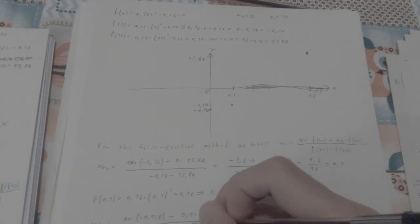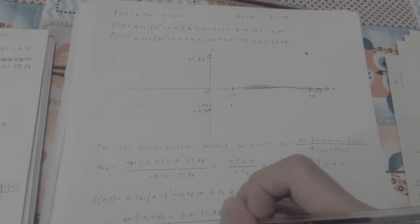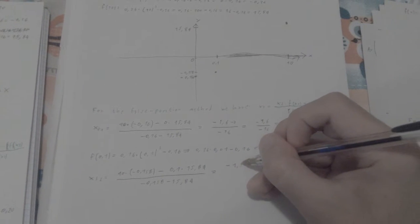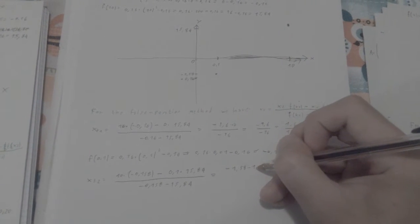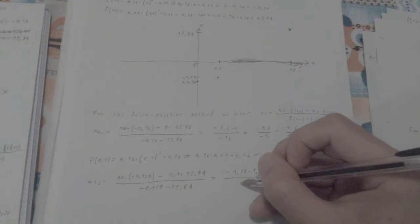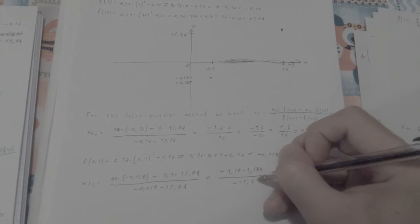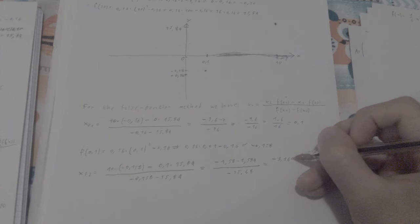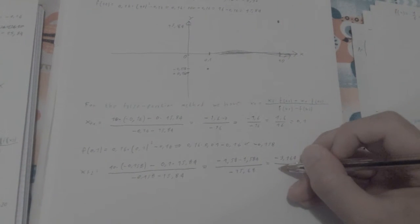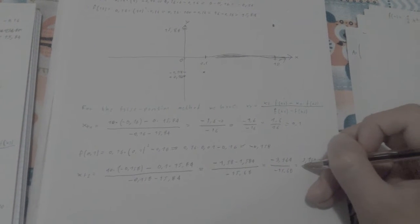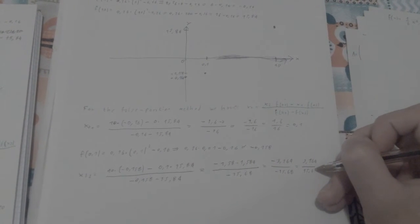Everything over f(x1), so negative 0.158, minus f(x2), so minus 15.84. This is actually going to give me negative 1.58 minus 1.584 over negative 15.68, which gives me negative 3.164 over negative 15.68, which is like saying 3.164 over 15.68, which is 0.20.